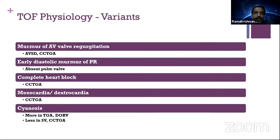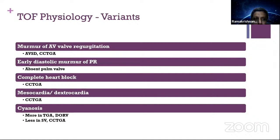Other uncommon features that can help differentiate TOF variants: if you find a murmur of systemic AV regurgitation (MR), that is clearly AVSD or CCTGA. If you find an early diastolic murmur of PR, it must be absent pulmonary valve syndrome. If there is complete heart block, think CCTGA, mesocardia, or dextrocardia with CCTGA. The degree of cyanosis also helps — very intensely blue patients generally occur with TGA or DORV physiology where there is unfavorable streaming. Single ventricle pathways generally have a balanced circulation, and CCTGA can have normal saturation at 20–30 years.